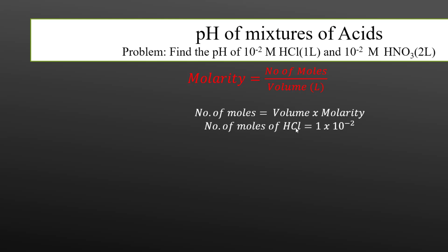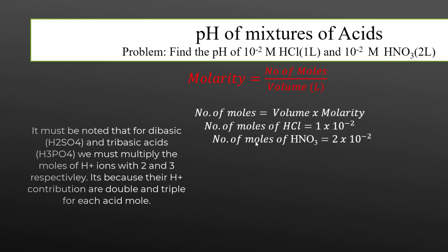Number of moles of HCl can be calculated simply by multiplying the volume of HCl which is 1 liter and its molarity is 10 to the power minus 2. So these are the number of moles of HCl and likewise we can find the number of moles of HNO3 as well. Its volume is 2 liters and 10 to the power minus 2 is the molarity of HNO3.